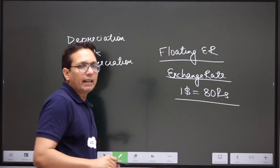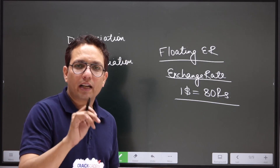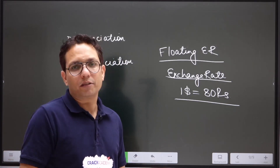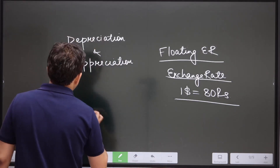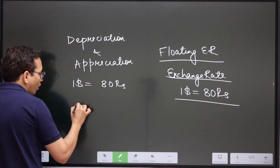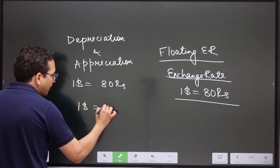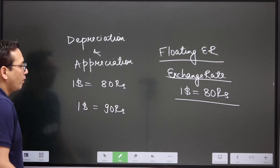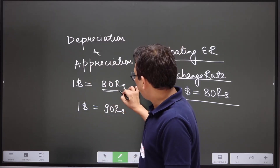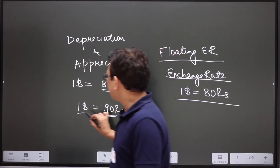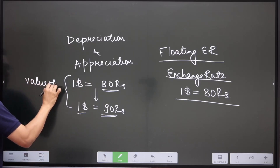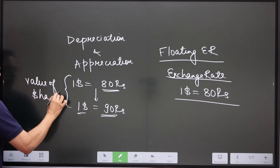If the exchange rate is one dollar equal to 80 rupees, it means if a US resident gives the bank one dollar, he gets 80 rupees. Now suppose earlier for one dollar he was getting 80 rupees, and now for one dollar he starts getting 90 rupees. Can I say the value of dollar has increased?